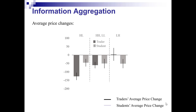One novel characteristic of our experiment is that we introduce private information in a standard trading game. The graph here shows the three contingencies that could occur during trading in terms of price change from one period to another, due to private information. The first contingency, HL, is one in which if private information is perfectly aggregated, we would observe a change in price by 150. The second is a decrease by 50, and the third is no price change at all.